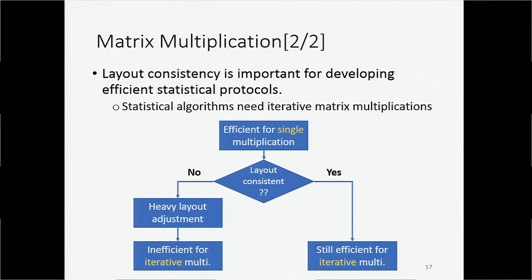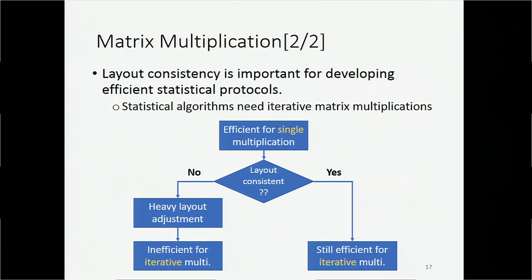Why does layout consistency matter? Because statistical algorithms need iterative matrix multiplications. If we have an efficient method for a single matrix multiplication but it is not layout consistent, we might need to adjust the layout of the resulting matrix before each iterative multiplication, making the method inefficient overall. On the other hand, if the method is layout consistent from the beginning, it can be efficient even for iterative algorithms.